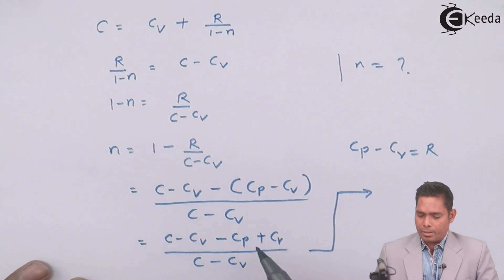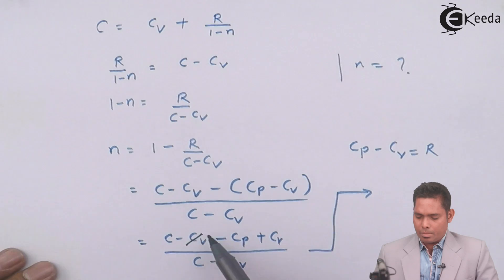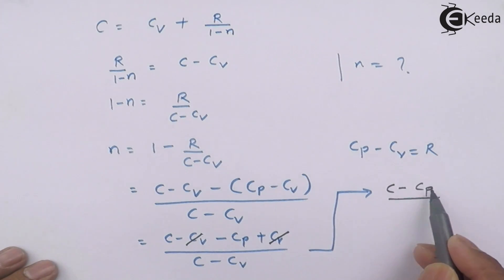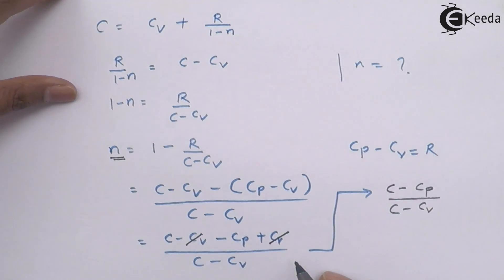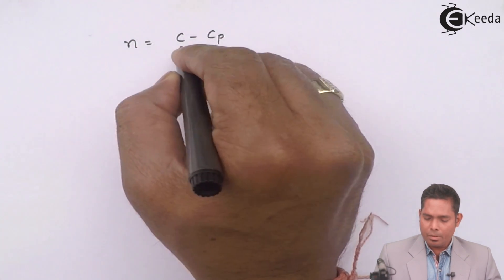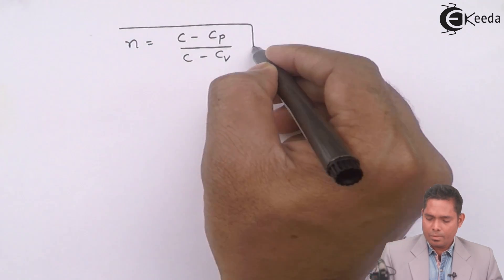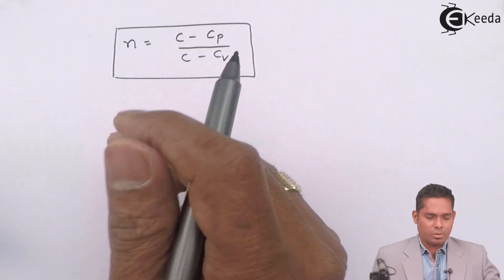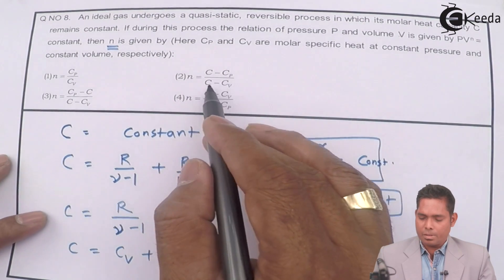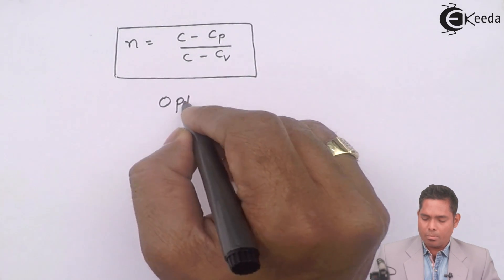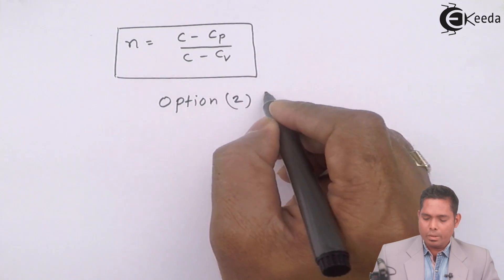From here I will write, but I will cancel. This minus Cv and this plus Cv will cancel out. This becomes C minus Cp divided by C minus Cv. So this is the value of N that I am getting. So the value of N comes out to be C minus Cp divided by C minus Cv. If I see the option, C minus Cp divided by C minus Cv, option number 2 is the correct option. So option number 2 is correct.